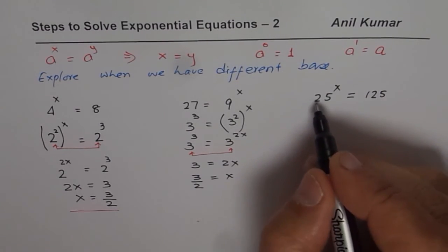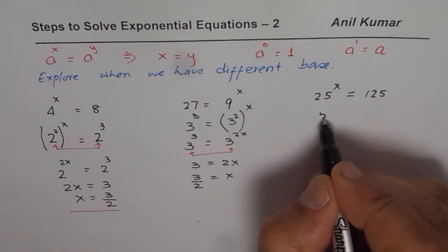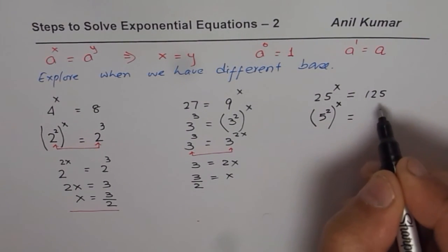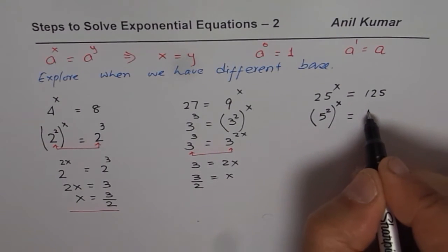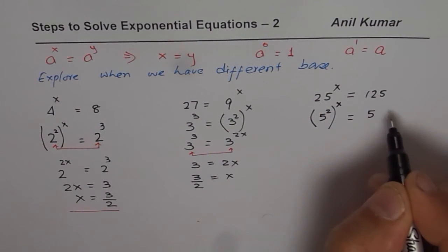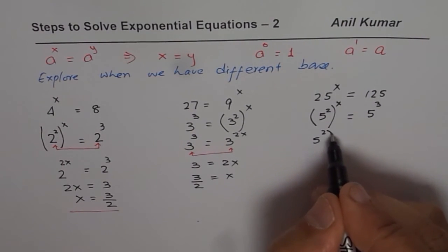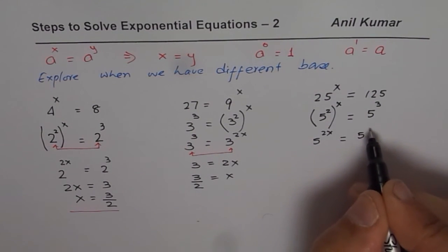Let's do this one. Now, this 25 as you know, could be written as 5 square. 5 square, 25 to the power of x. Equals to, now 125 is 5 times 5 times 5, that is 5 cube. So again, we get 5 to the power of 2x equals to 5 cube.